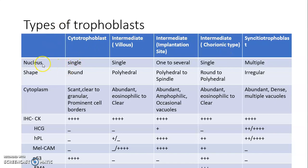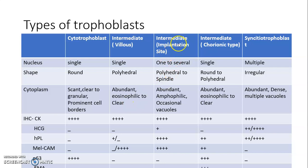Cytotrophoblasts have a single nucleus which has a round shape. The cytoplasm is scant, clear to granular with prominent cell borders. In the villus type of intermediate trophoblast, the nucleus is also single but polyhedral in shape with abundant eosinophilic to clear cytoplasm.